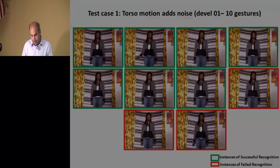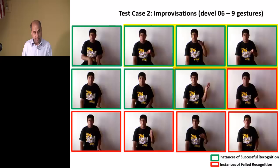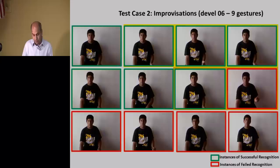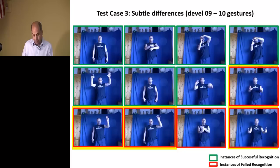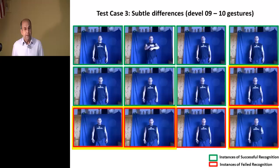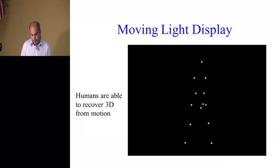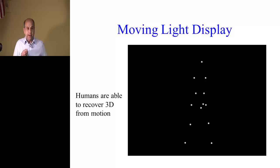Here are more examples of different gestures. These are the RGB images, but there are corresponding depth images to be analyzed. What the Kinect provides, in addition to the RGB, is depth images. So that's one example.